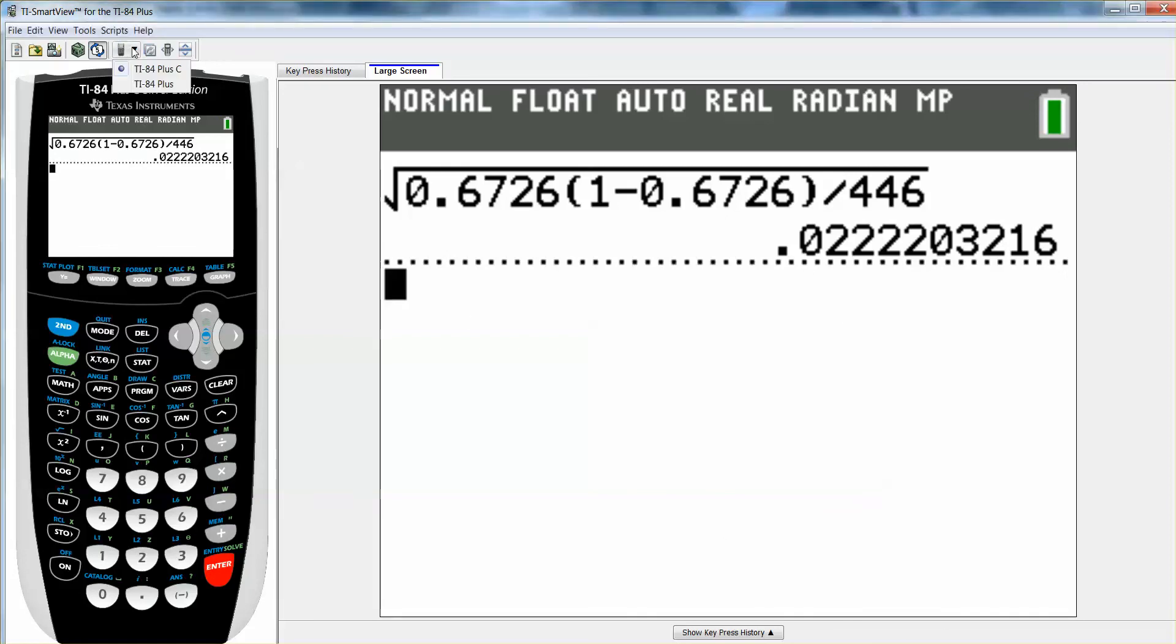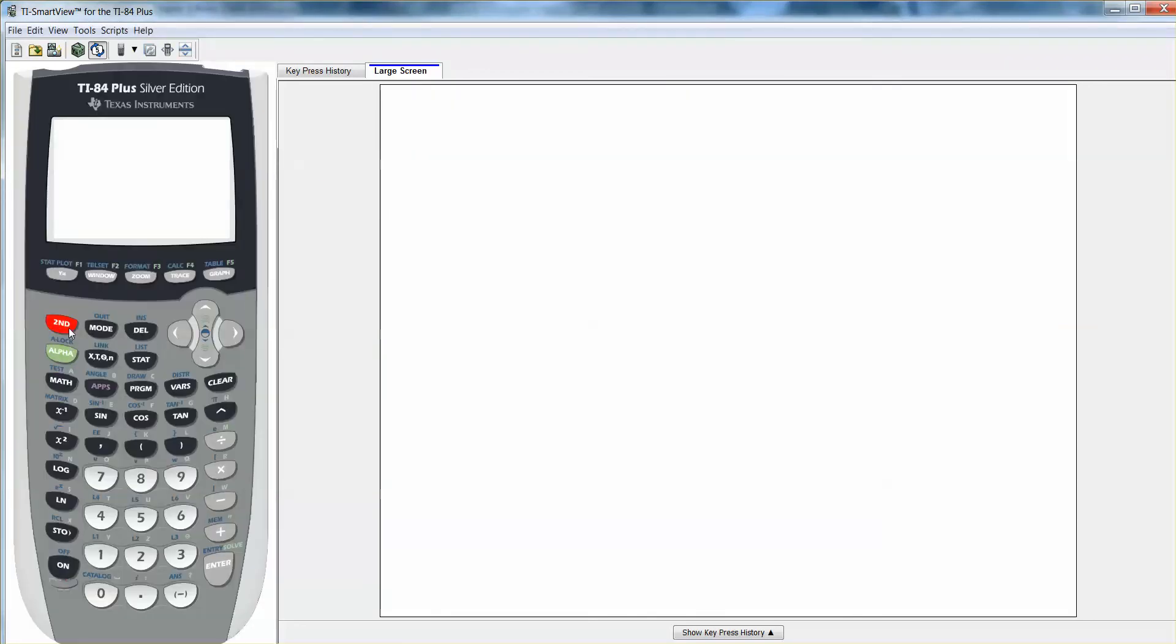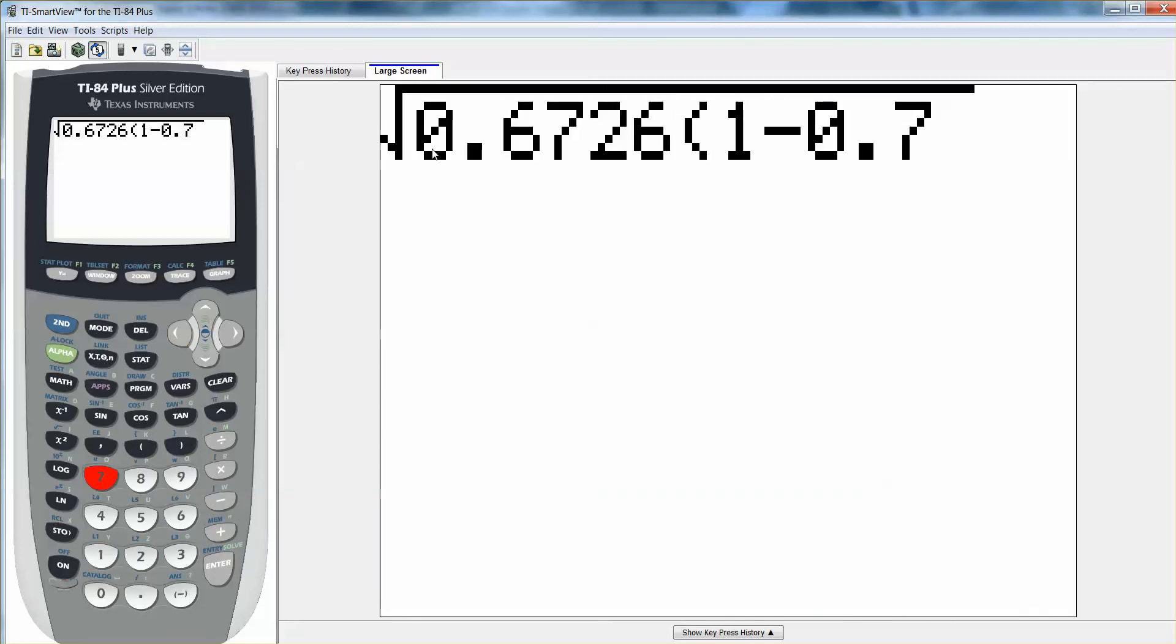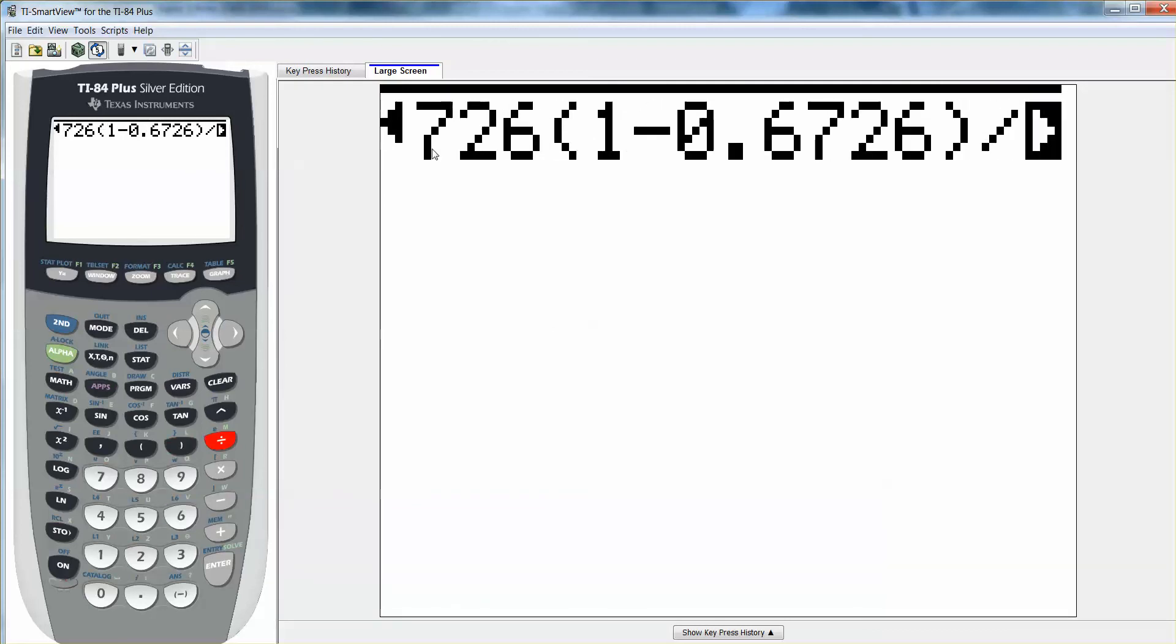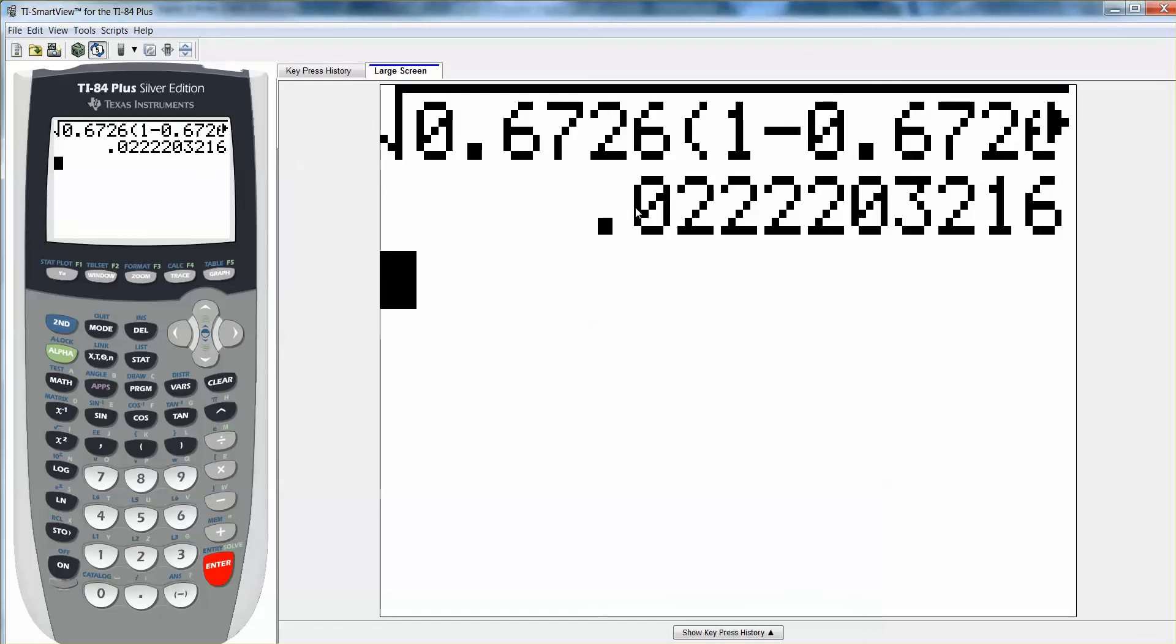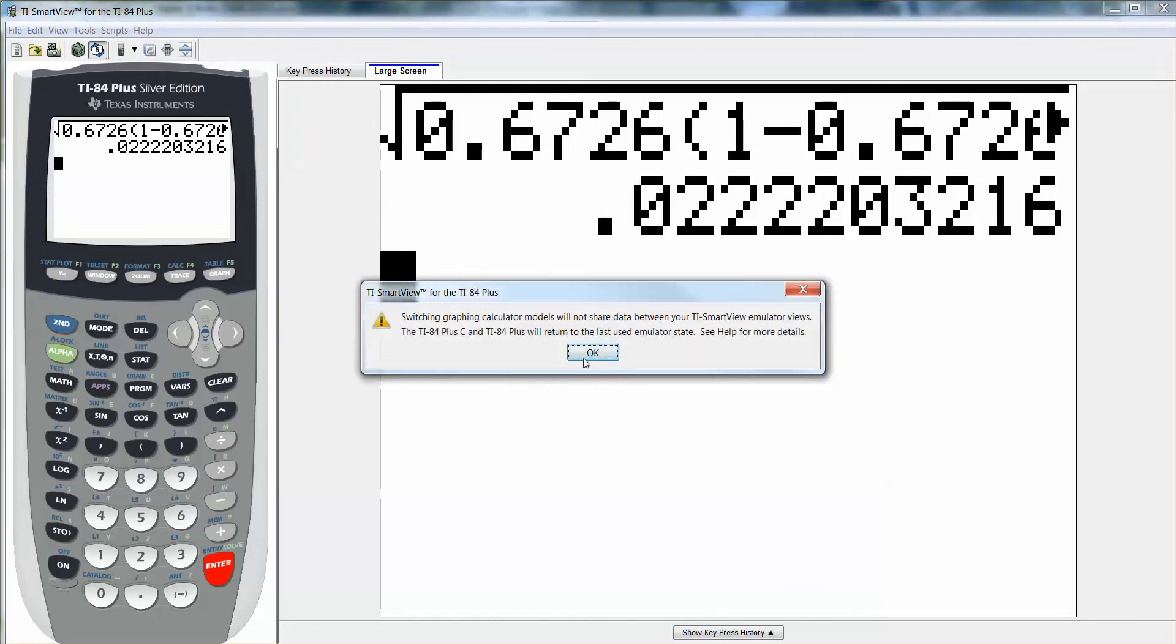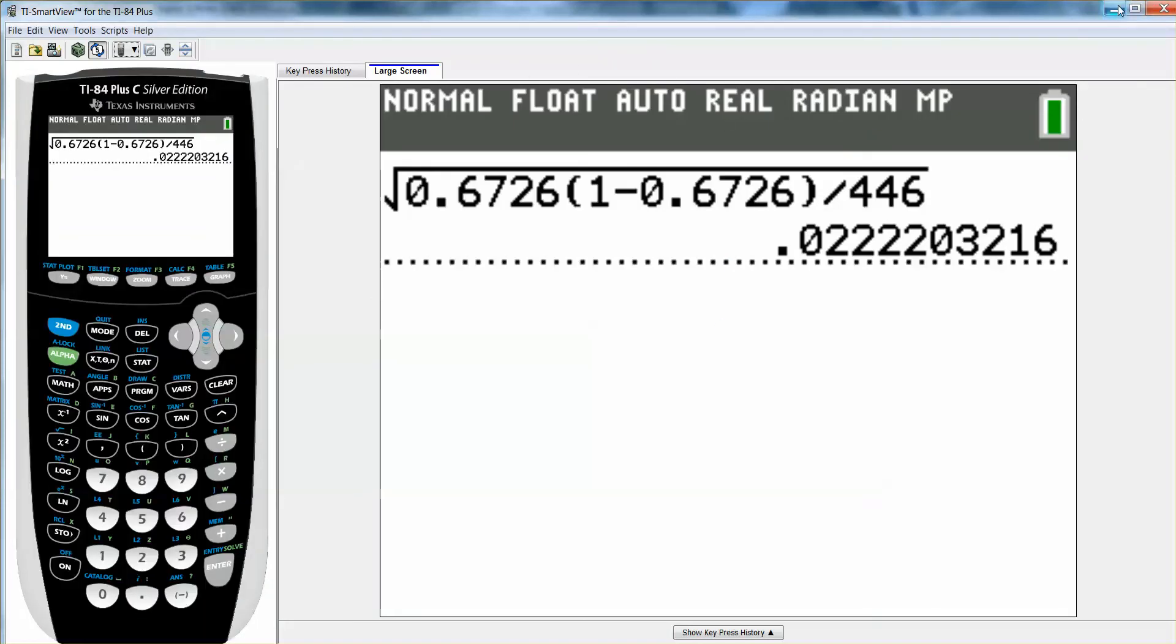Now let me show you on an old calculator, because an older calculator doesn't quite work as nicely, the older 84s. So square root, and it's going to start you off here, and then you say, oh, this one actually is working just as nicely. That's because I have the new operating system. 0.6726 times 1 minus 0.6726, close parentheses, divided by 446, enter. And you get 0.0222, just like I said you would. But I prefer the color calculator, so I'm going back to it.